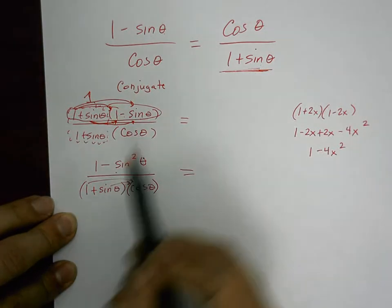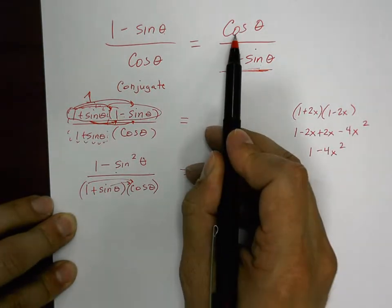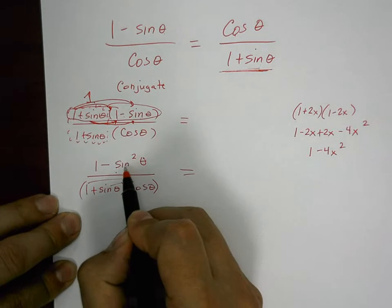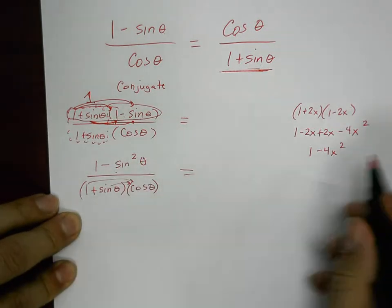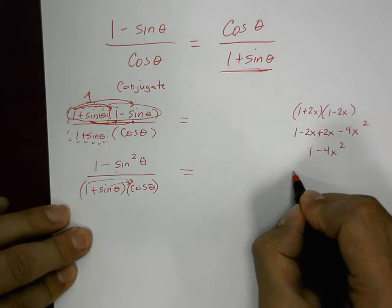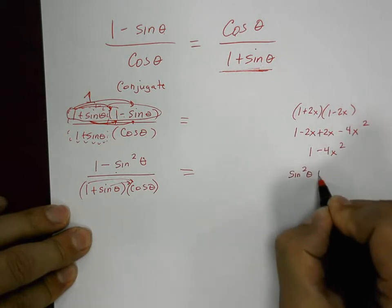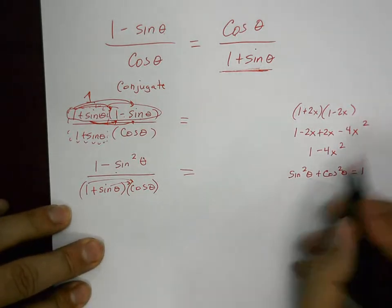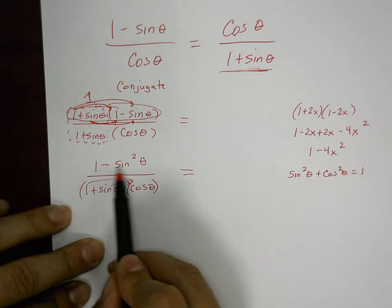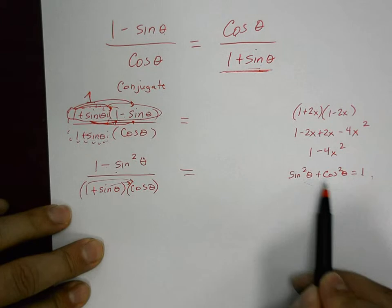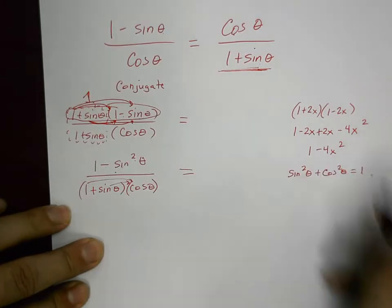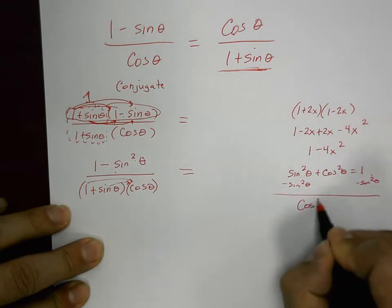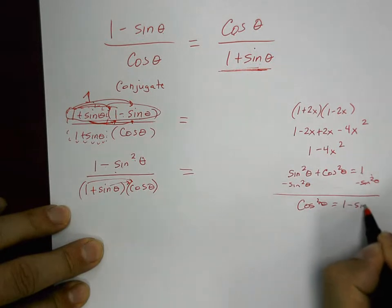You look at the numerator and think you're still nowhere close to cosine of theta — but you are. Any time you see sine squared, cosine squared, or secant squared, think Pythagorean identities. The first Pythagorean identity is sine squared theta plus cosine squared theta equals one. If you subtract sine squared theta from both sides, you get cosine squared theta equals one minus sine squared theta, so you can replace one minus sine squared theta with cosine squared theta.